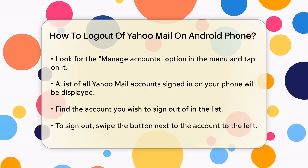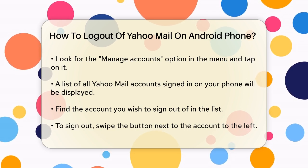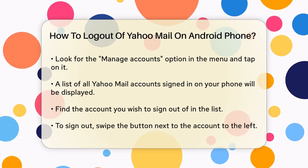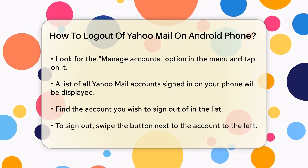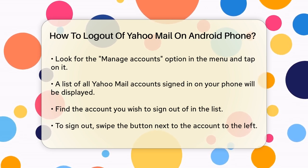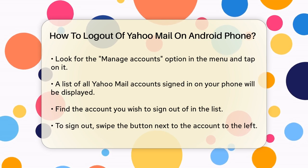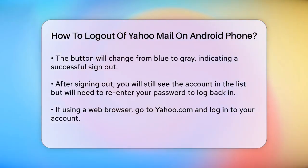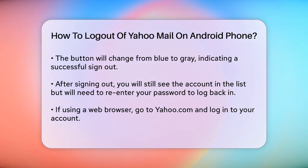In the list of accounts, find the one you want to sign out of. To sign out, you need to turn off the account — swipe the button next to the account you want to sign out of to the left. The button will change from blue to gray, indicating that the account is now signed out.